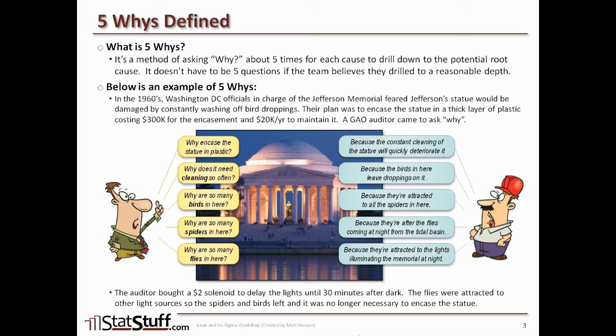This illustration shows how you can continue to get to the root cause of the problem. Once you identify the root cause, you have something you can use to fix it — which is obviously a much simpler, more elegant solution than the original $300,000 encasement plan. Again, I don't know if it's a real example or not, but it's a nice one to illustrate how the 5 Whys tool could work.